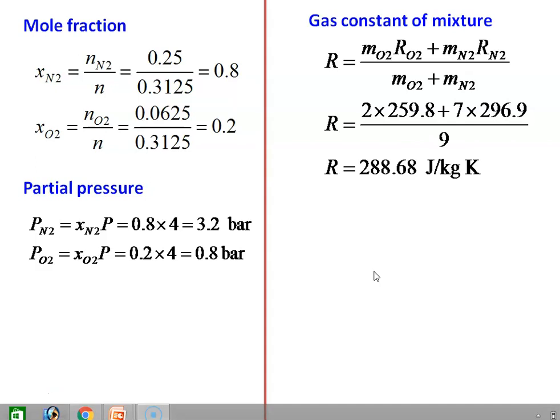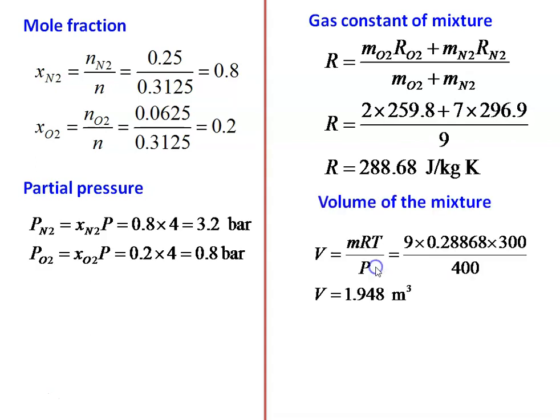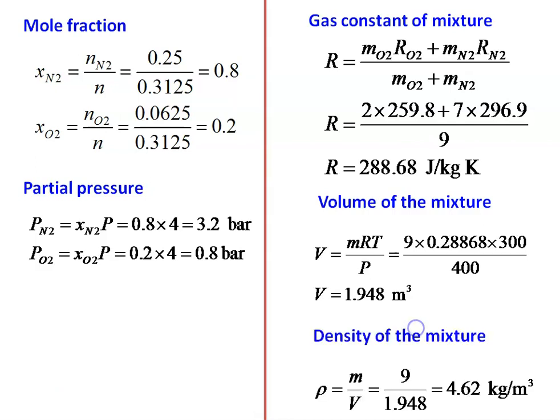The gas constant of the mixture is 288.68 J/kg·K. Volume of the mixture: V = MRT/P = (9 × 288.68 × 300) / 400000 = 1.948 m³. Density of the mixture: ρ = M/V = 9 / 1.948 = 4.62 kg/m³.